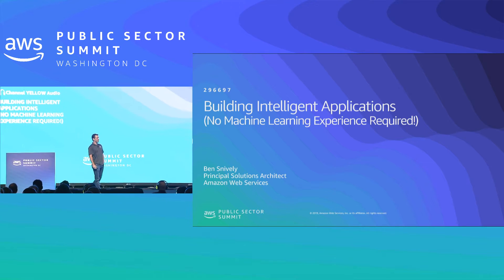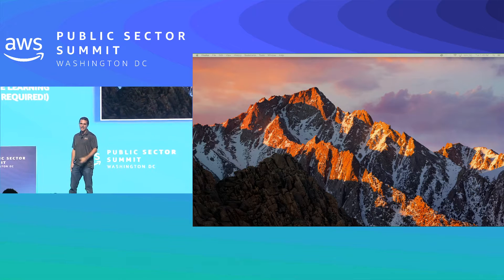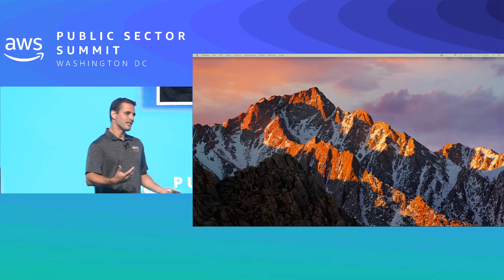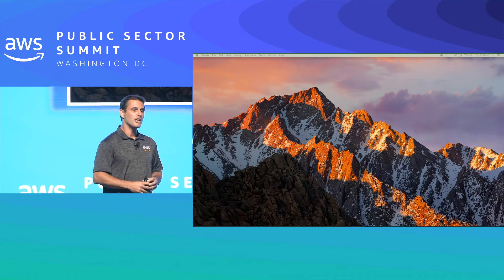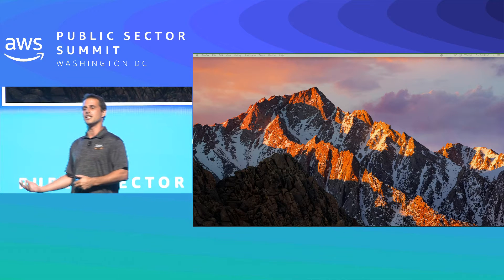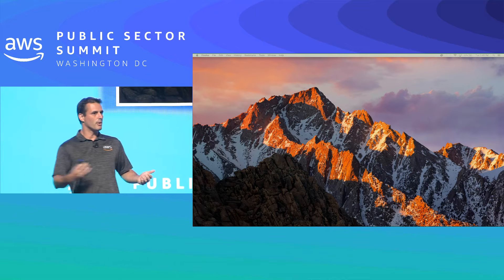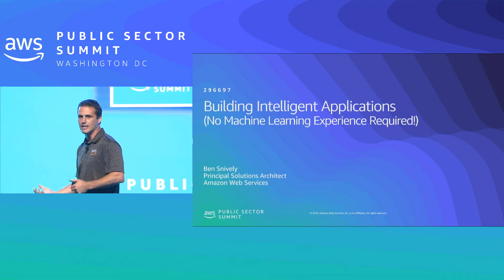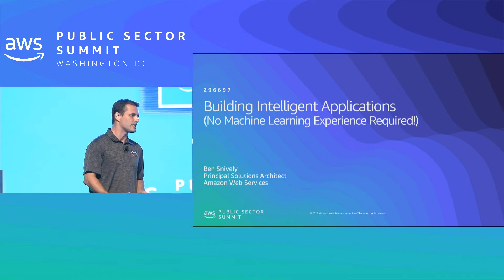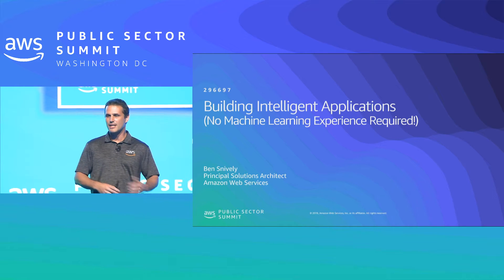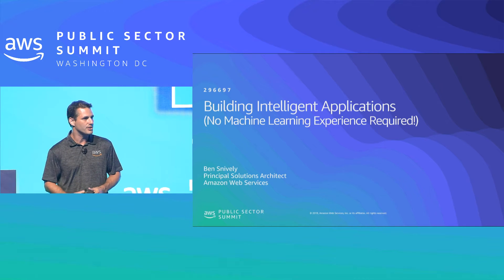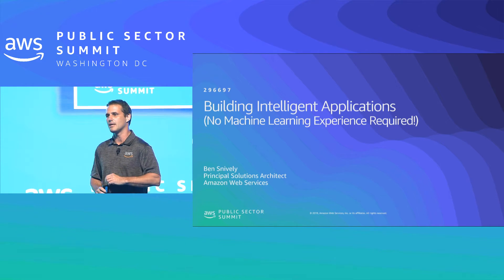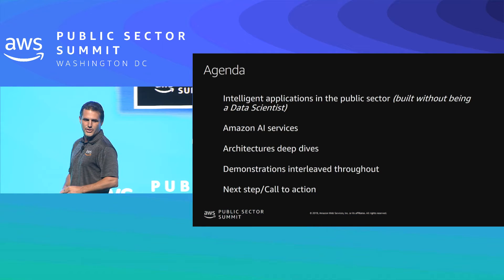My name is Ben Stively, I'm a special solutions architect in the big data and analytical space. In today's session we're going to cover how to use AI services to build intelligent capabilities and intelligent applications. We're going to talk about various use cases, step through the technology architecture, and include about three different demonstrations.